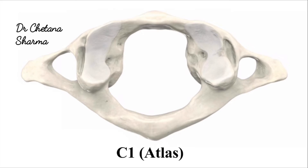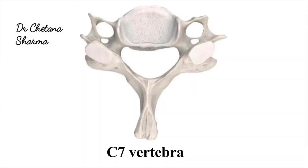In this image, you can see the first cervical vertebra, which is devoid of body and spine as well. In this image, you can see the seventh cervical vertebra, which has a large spine.